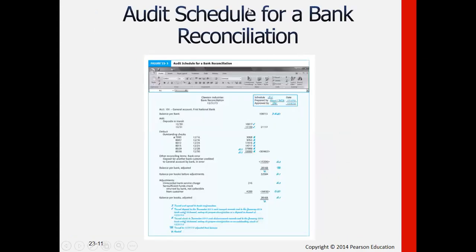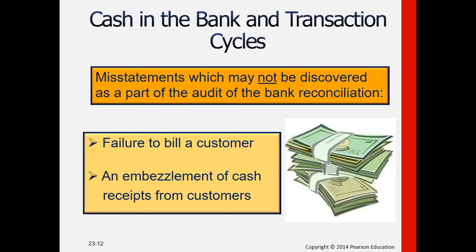Here is an example of a bank reconciliation schedule that auditors check and verify, although bank reconciliation is primarily the client's responsibility. We verify that the values and amounts are presented correctly. Cash in the bank is the most important cash item because it is very liquid, and today transactions are conducted via checks, online transfers, or bank transfers. Misstatements can happen, and some may not be discovered through auditing the bank reconciliation alone — for example, failure to bill a customer.